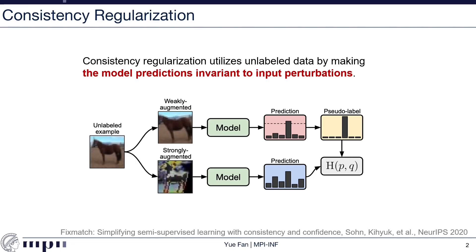Let me start with a brief introduction of consistency regularization in semi-supervised learning. In a common semi-supervised learning classification problem, we have a labeled dataset and an unlabeled dataset. The high-level idea of consistency regularization is that the model should be invariant to different perturbed versions of the same image. Perturbations can be any types of noise injection — for example, data augmentation, Gaussian noise, or even dropout. For perturbed versions of the same input, the model's output should be the same; for example, the feature generated from the encoder should have a small L2 distance, or the predicted class label should be the same.